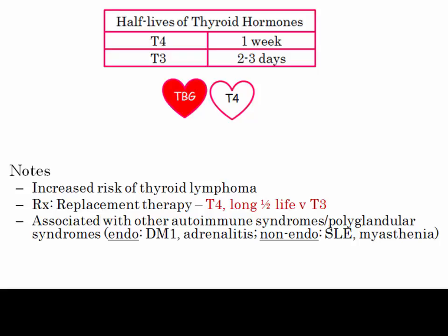T3, also known as triiodothyronine, has a shorter half-life owing to decreased binding to TBG and consequently requires dosing two to three times a day. Also be aware that autoimmune thyroiditis is associated with other autoimmune disorders, including endocrine and non-endocrine syndromes such as lupus.